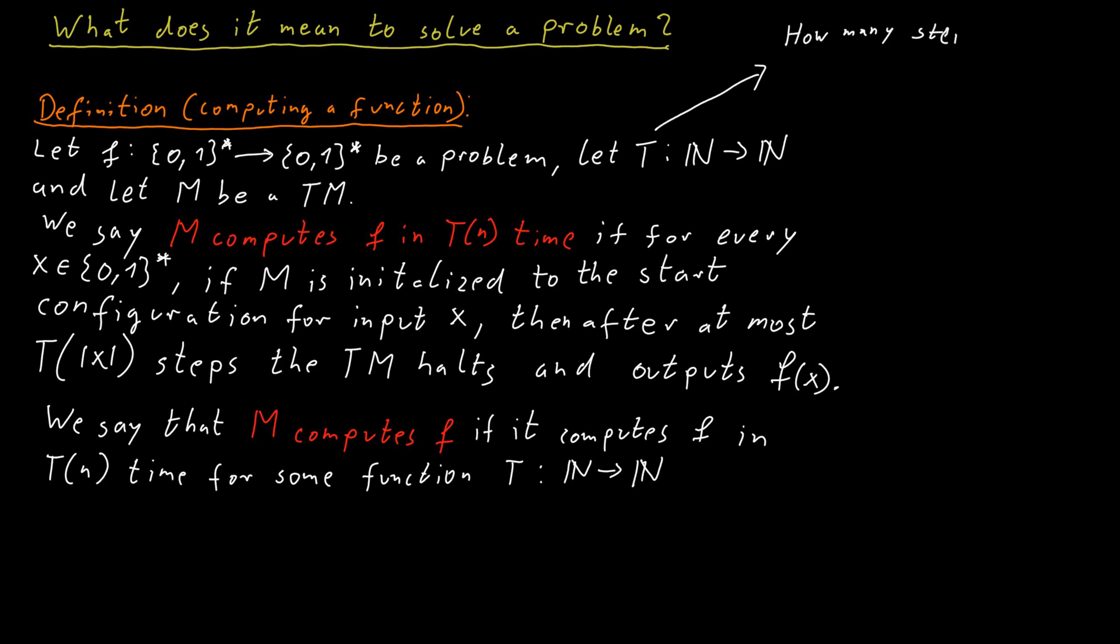T(n) expresses how many steps are allowed for each length of the input. So for example, if the input consists of a bit string of length 5, then we might allow up to 50 steps.